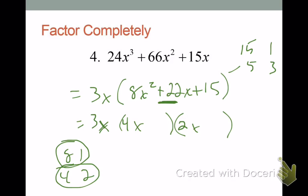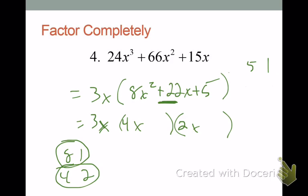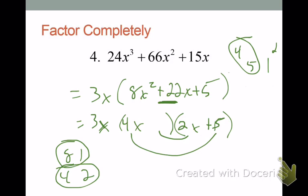We've got to make 22 somehow. 4 times 15 is way too big — not even going to try that. 4 times 1 is 4, 2 times 15 is 30, that's 34 — way more than 22. I found my mistake: that should be 5 and 1. So going back: 4 times 5 is 20, 2 times 1 is 2, that's 22 — that's what we want. Using smiles to link them up: the 4 and the 5 go together, so plus 5 goes here, and plus 1 goes here. Done.